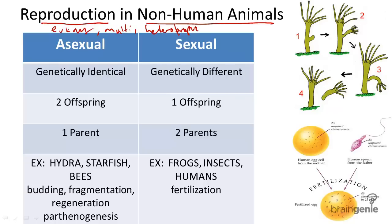We need to compare asexual and sexual reproduction because these are the two major camps of reproductive techniques. Many animal species can reproduce both asexually as well as sexually.